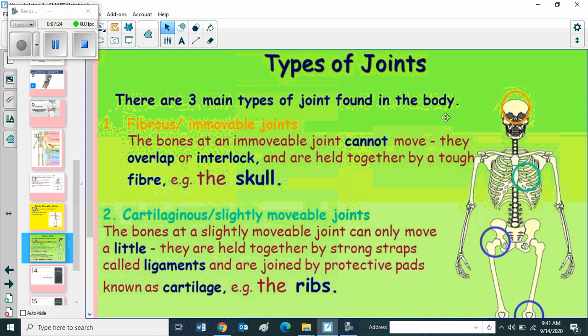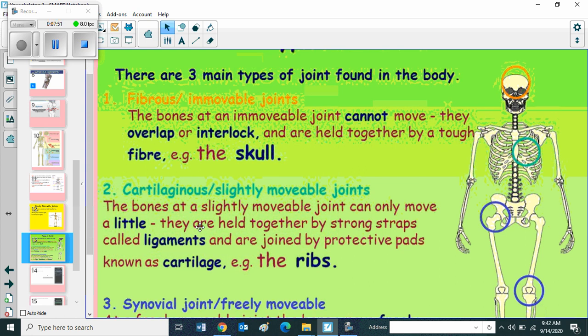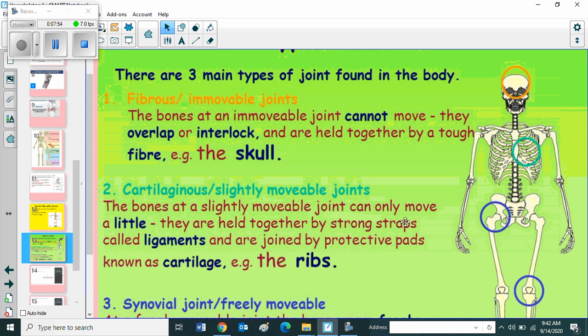The next one types of joints. There are three main types of joints found in the body. First one, fibrous or immovable joints. The bones at an immovable joint cannot move. They overlap or interlock and are held together by a tough fiber. Example, the skull. Second one, cartilaginous or slightly movable joints. The bones at a slightly movable joint can only move a little. They are held together by strong straps called ligaments and are joined by protective pads known as cartilage. Example, the ribs.